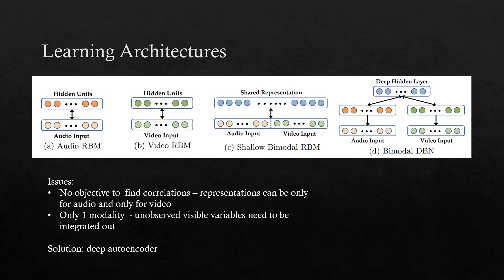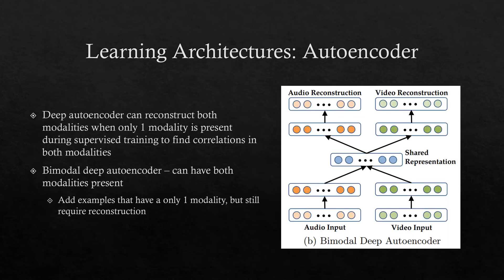The solution to these issues is a deep autoencoder. To combat the single modality issue, the deep autoencoder is trained to reconstruct both modalities when only a single modality is present, in order to find correlations. The bimodal deep encoder is able to juggle multiple modalities by using noisy data that contains zero values for one of the input modalities and regular values for the other. Regardless of the values, both modalities are reconstructed.